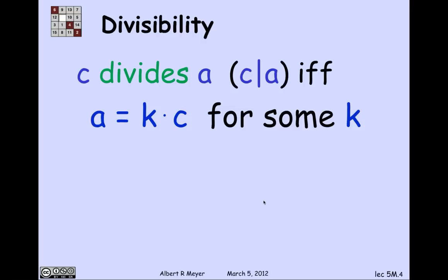A key relation we're going to be looking at today is the relation of divisibility between integers. All variables for the next week or so are understood to range over the integers — when I say number, I mean integer. I'm going to define C divides A using this vertical bar notation, read as 'C divides A,' if and only if A is equal to K times C for some integer K.